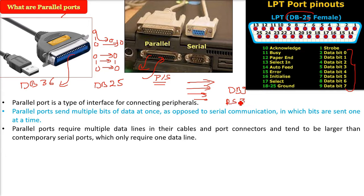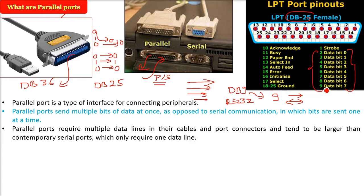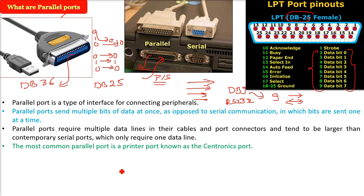In the DB9 connector, we had the RS232 recommended standard for serial connection. Of the 9 pins in DB9, 7 were control pins, leaving only 2 pins — one to send and one to receive — making it a full duplex serial communication. In contrast, the parallel port has 8 bits dedicated for transferring and receiving data.